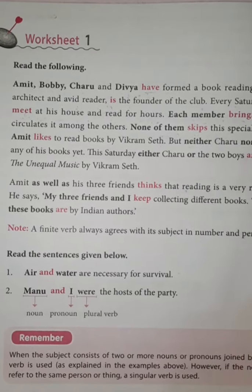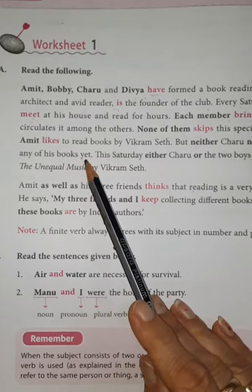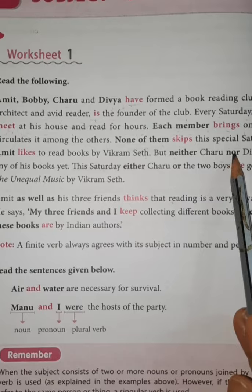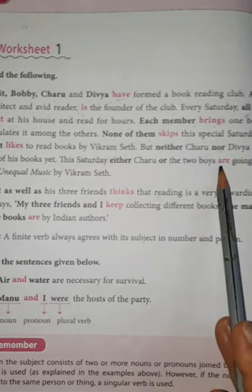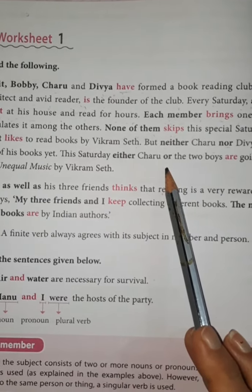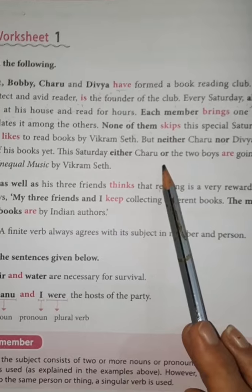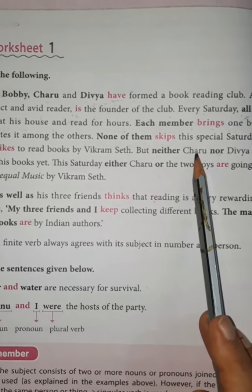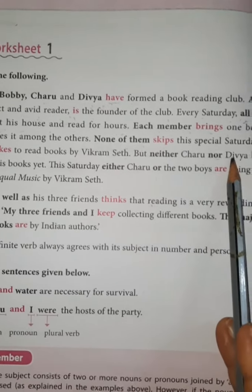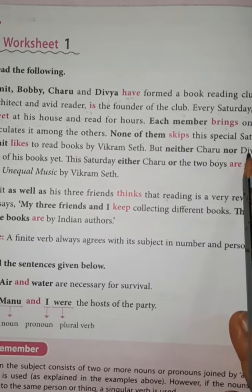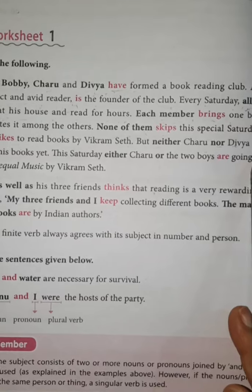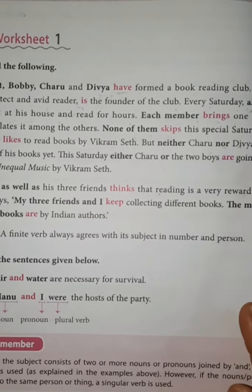But neither Charu nor Divya has read any of his books yet. Remember, when we use 'neither-nor' or 'either-or', the verb agrees with the second subject. The second subject here is Divya, which is singular, and so we use 'has', which is the singular verb.